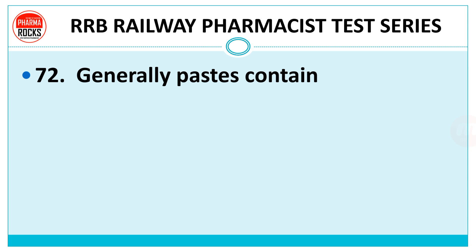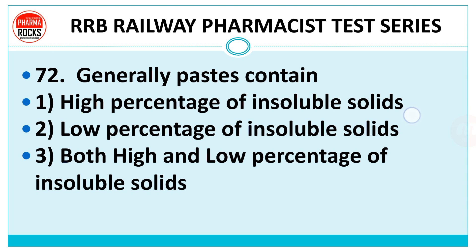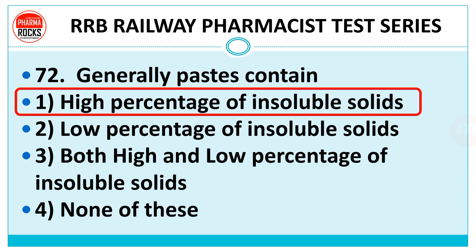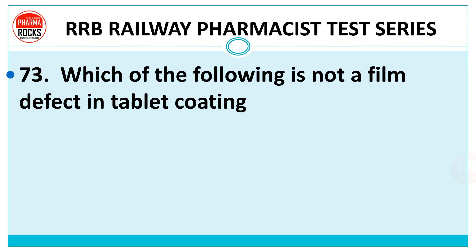Question 72: generally, paste contains — high percentage of insoluble solid, low percentage of insoluble solid, both high and low percentage, or none of these? The right answer is high percentage of insoluble solid. Paste is a semi-solid preparation intended for application to the skin. It generally contains a larger proportion of solid material, such as 25 percent, more than ointment, and therefore is stiffer. Zinc oxide paste and zinc paste are examples.